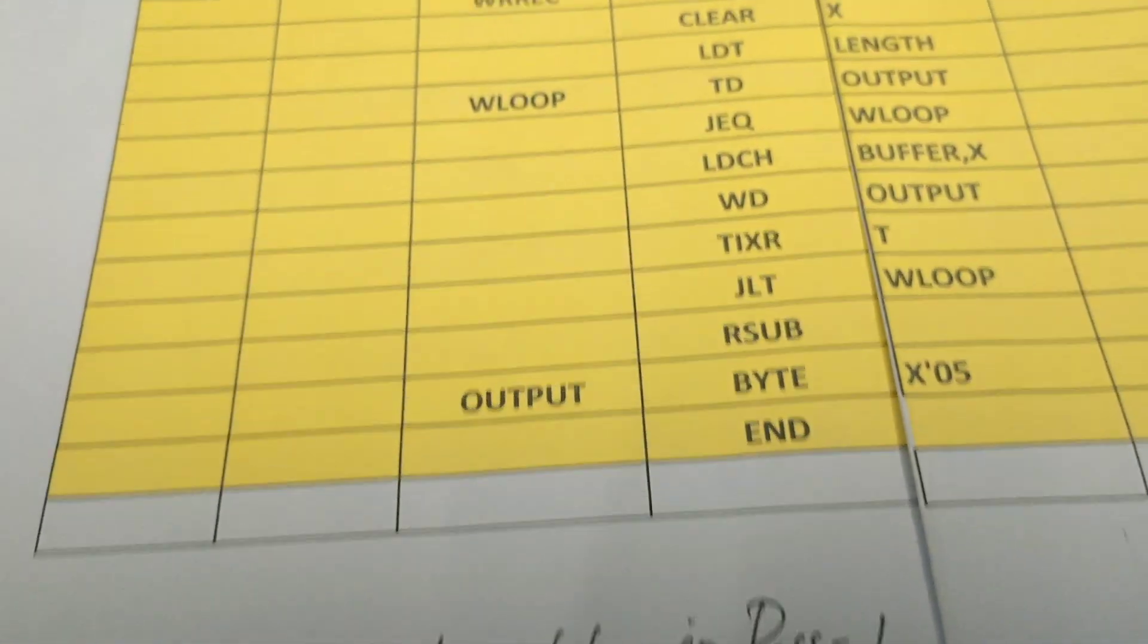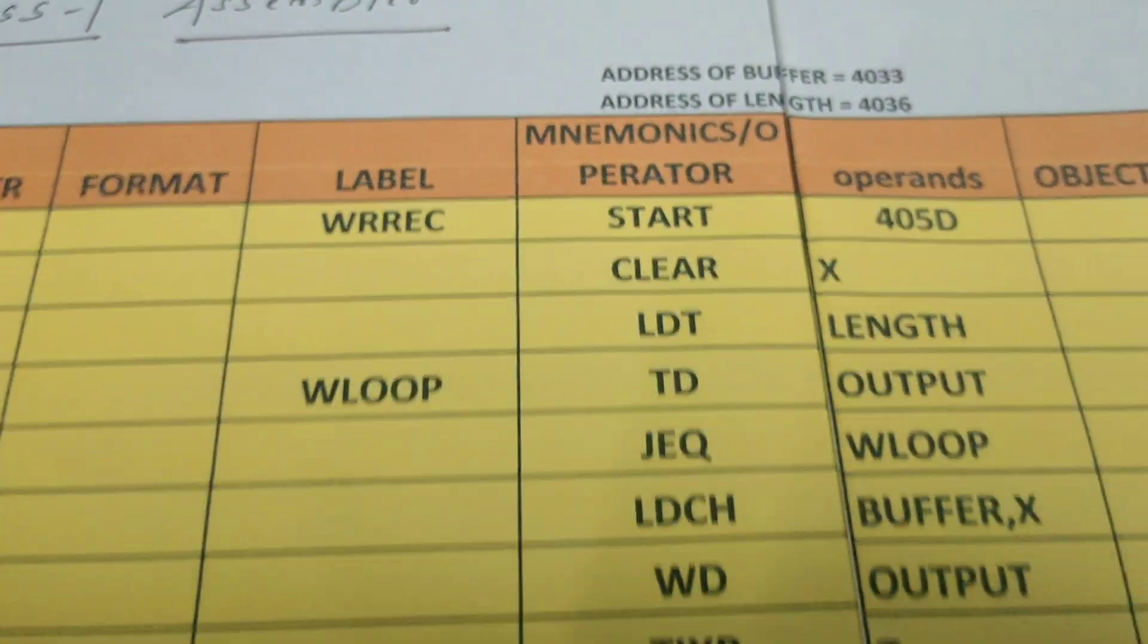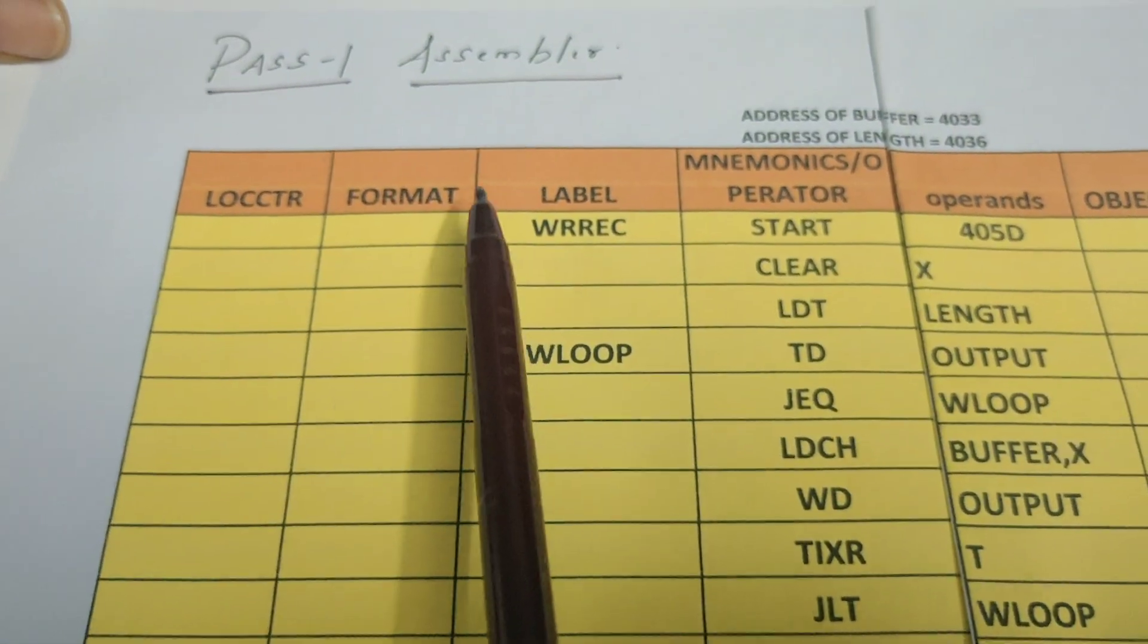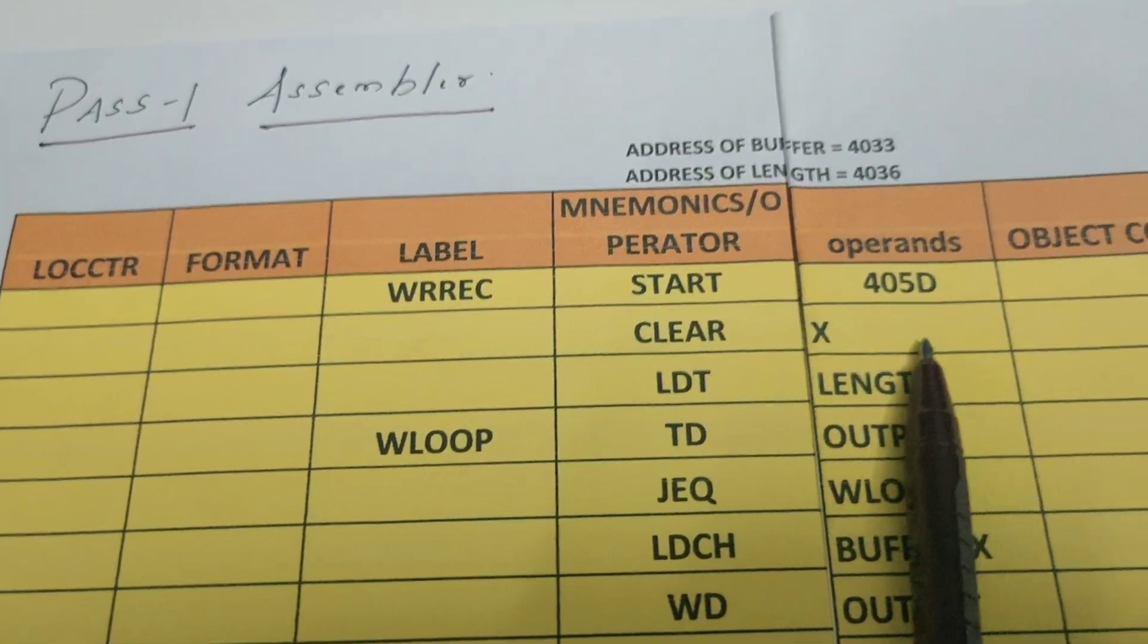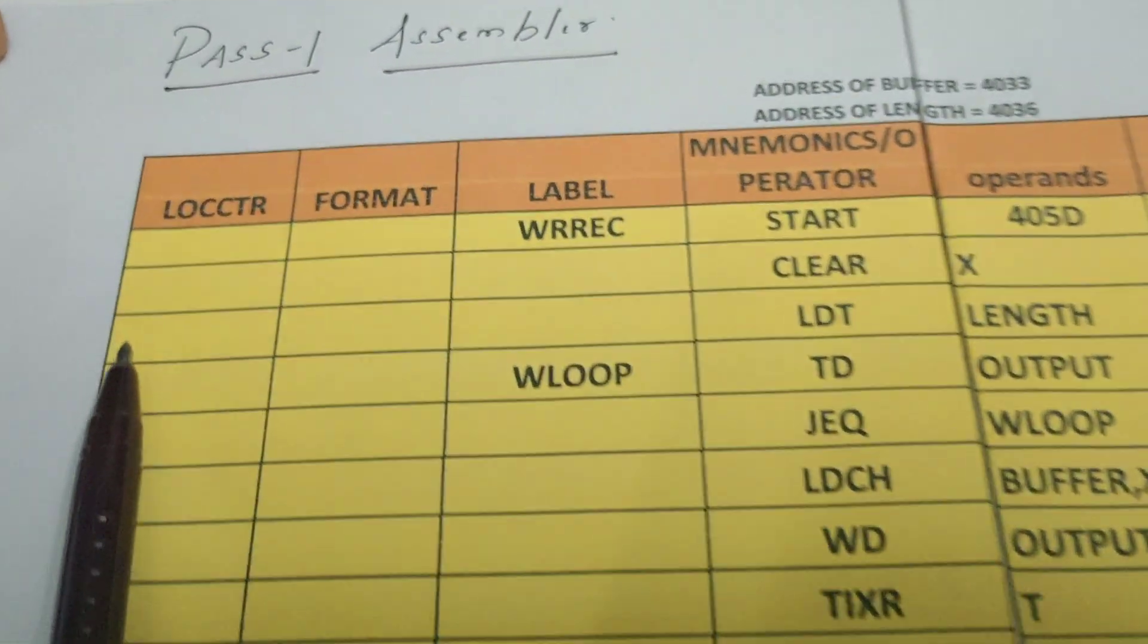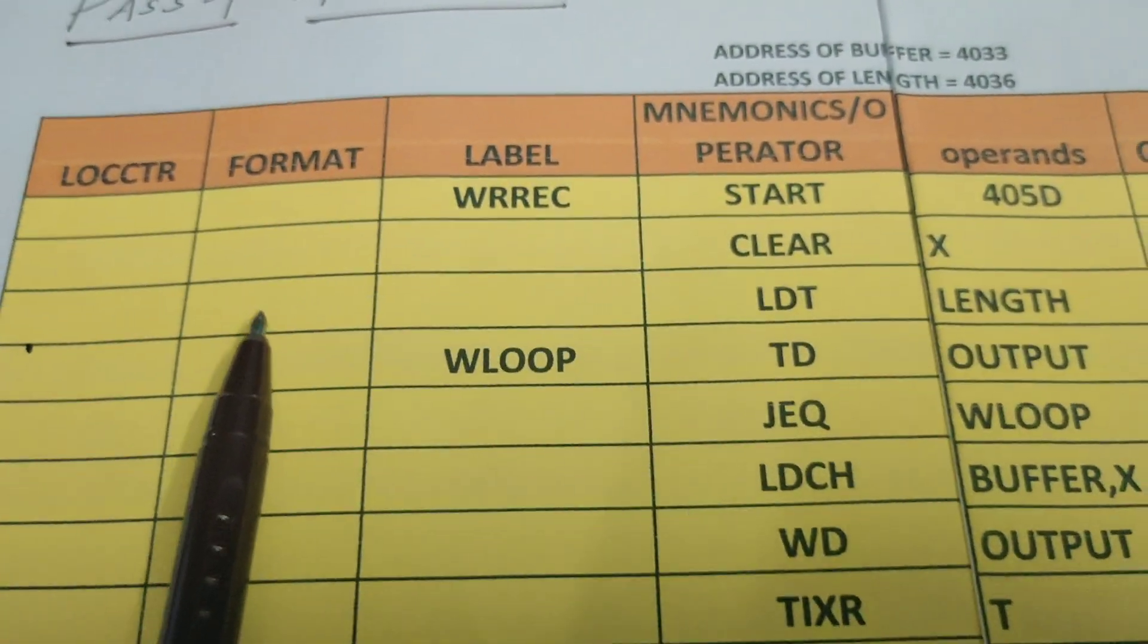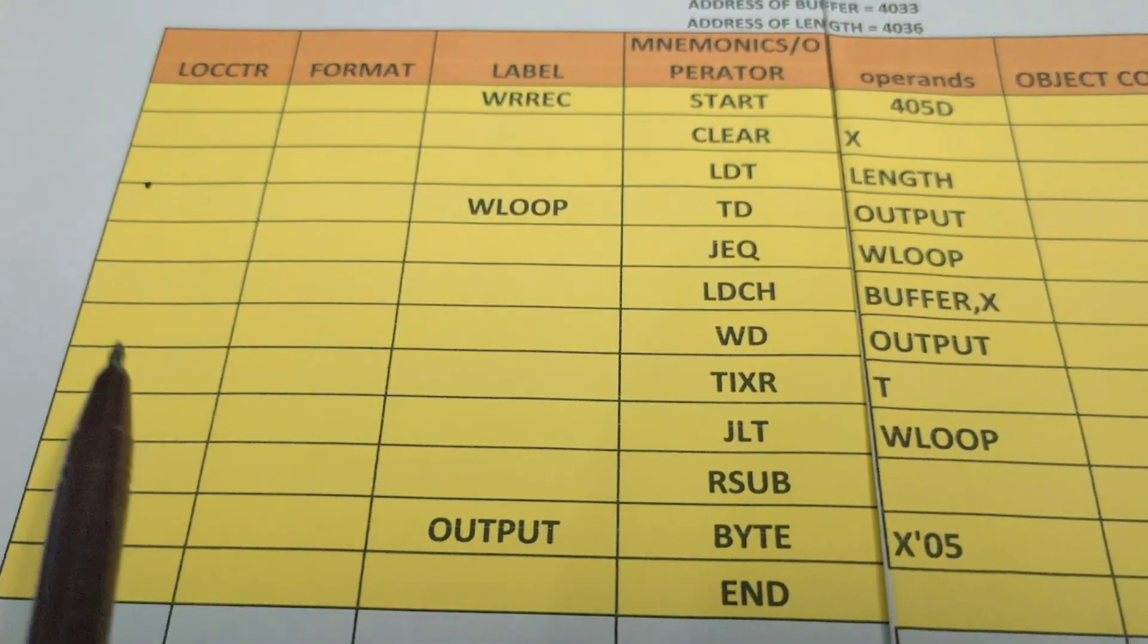So this is the example I have taken. Just look into the columns. This is a complete program: label, mnemonics or operator, and the operands. Apart from the program I have added some more columns here. One is location counter, another one is format. First we fill this format for our comfortability and understanding.